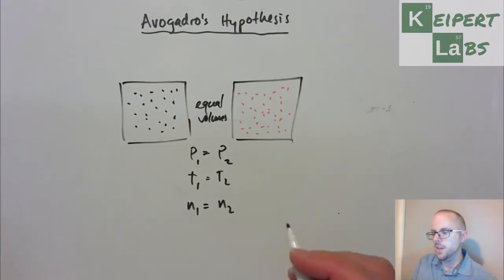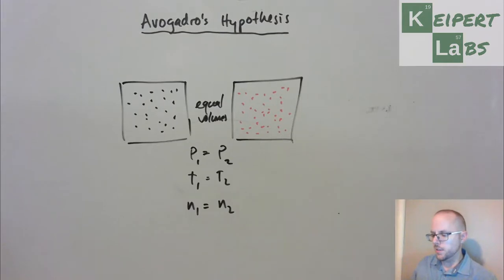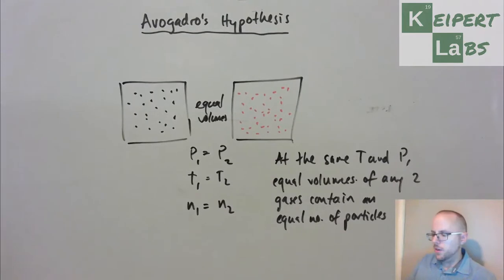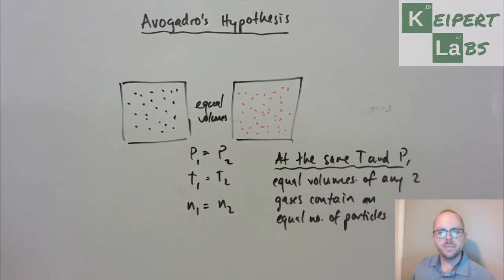And so then what that means is that then we get to this idea of the Avogadro hypothesis. So if at the same, so as long as we have the gases at the same temperature and pressure, that equal volumes of any two gases contain an equal number of particles.